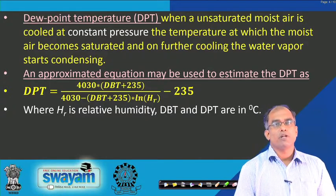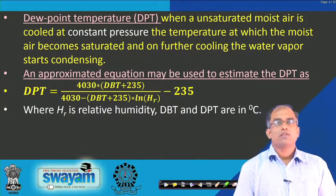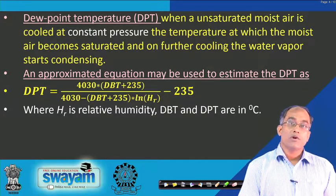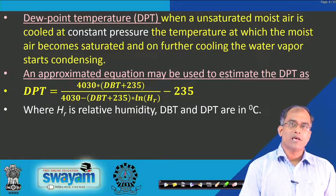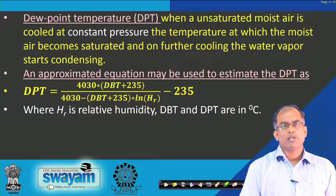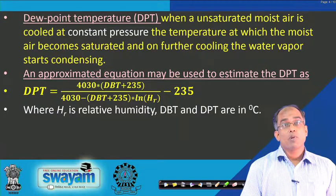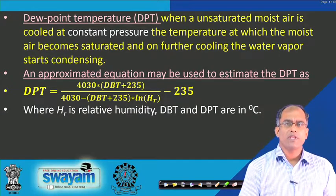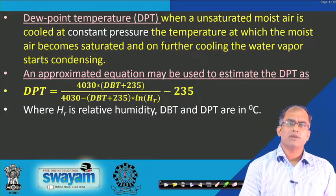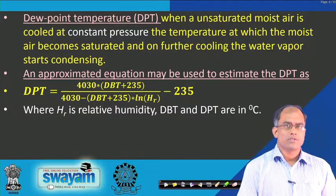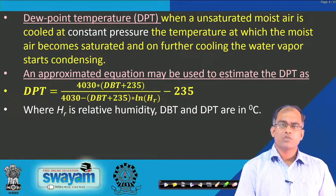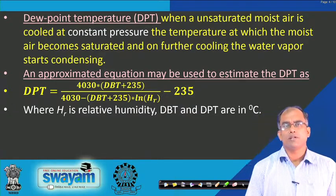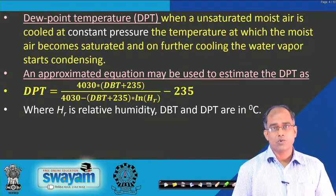Dew point temperature: when unsaturated moist air is cooled at constant pressure, the temperature at which the moist air becomes saturated and water vapour starts condensing is called the dew point temperature. An approximate empirical equation can be used to estimate the dew point temperature from the dry bulb temperature and relative humidity H_R (unitless), with the term ln(H_R) appearing in the equation.